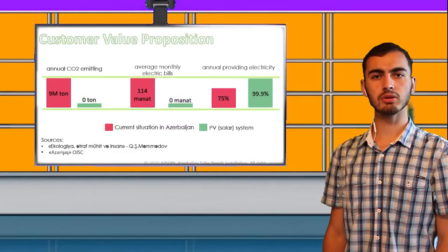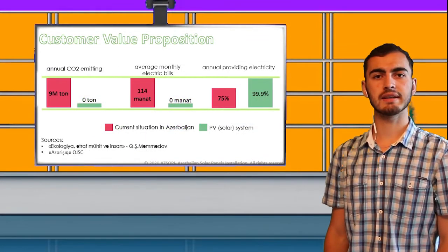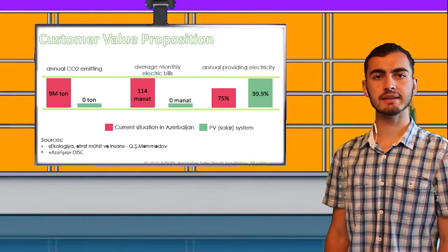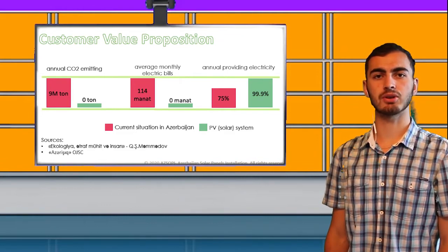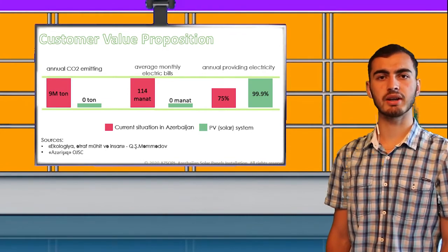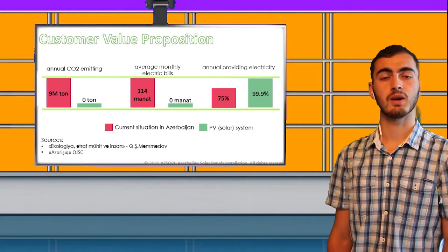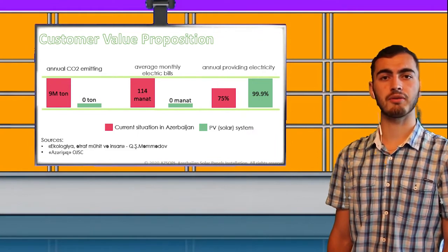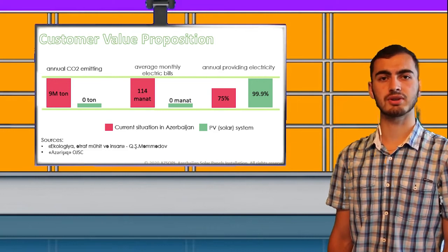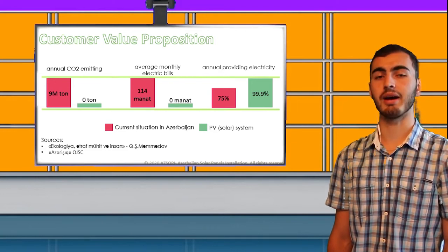Why solar energy? Producing electricity in thermal plants, the annual CO2 emission is 9 million tons, whereas this amount is zero for solar energy. Secondly, the average electric bill in Azerbaijan is 140 manat. Thirdly, I'm sure that lots of you have faced with electricity cutting problems. But with solar energy, we can assure that you will never face this problem again.